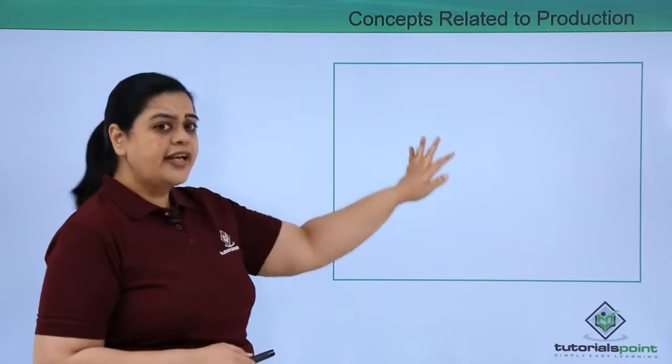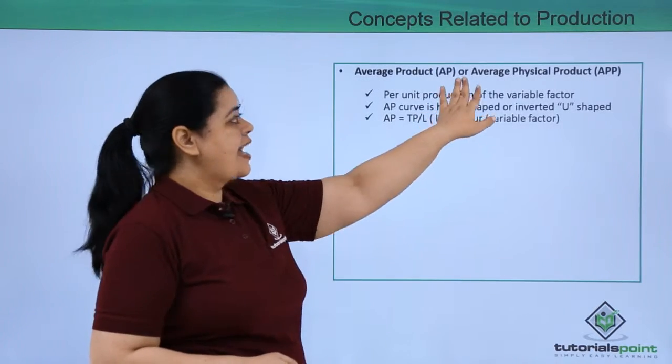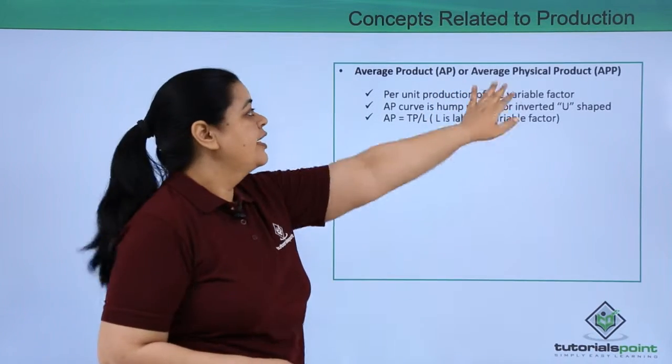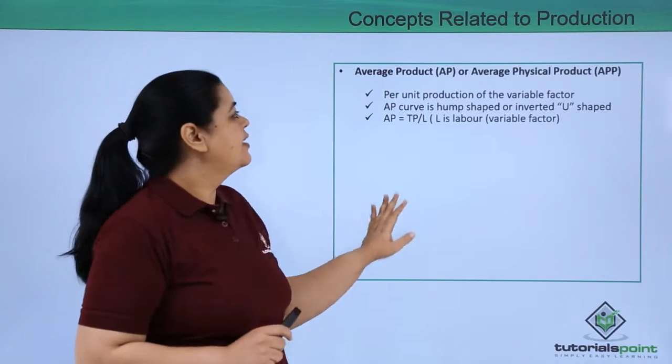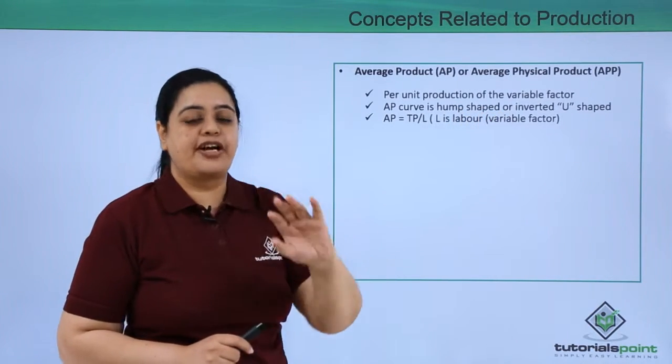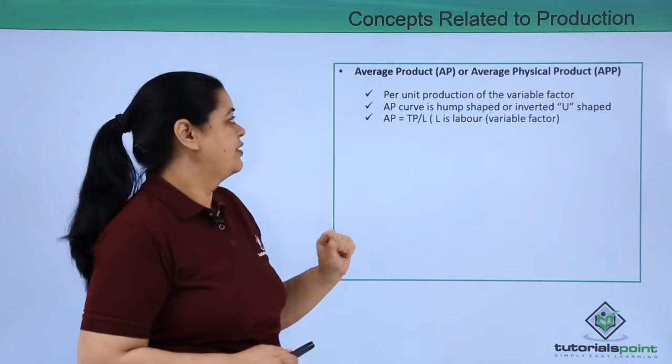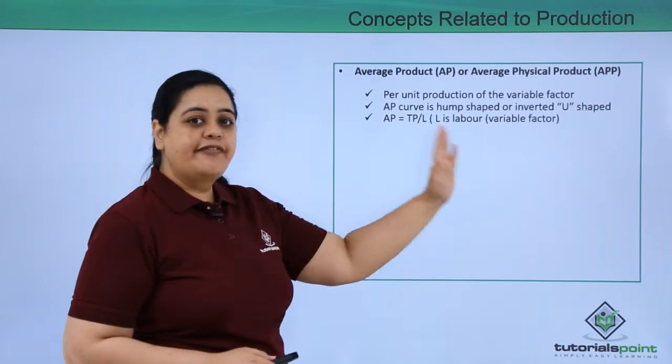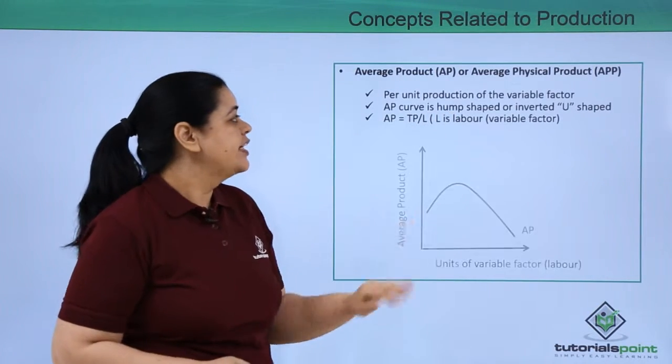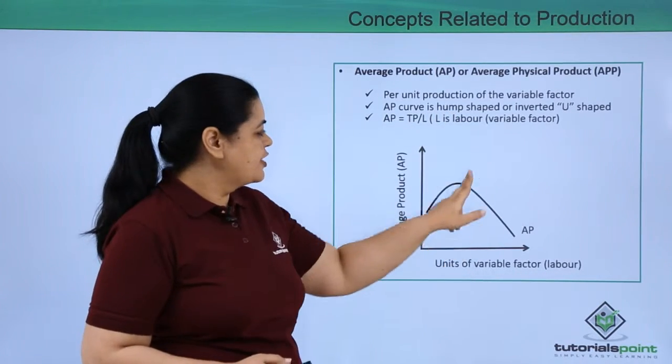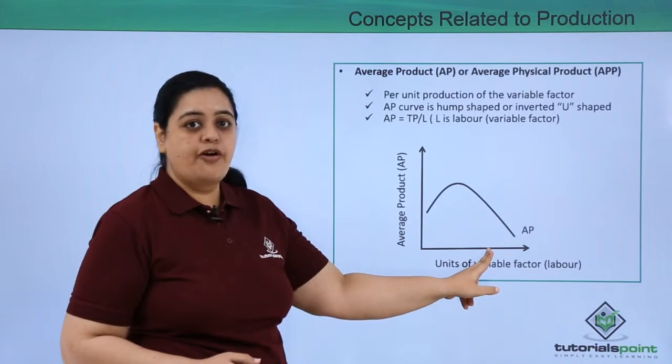Now let's move to the next concept which is the average product or average physical product APP. What is that? This is the per unit production of a variable factor. So if I have to show you the graphical representation of AP curve, it would be a U-shaped curve. You can see there is a U getting formed out here.